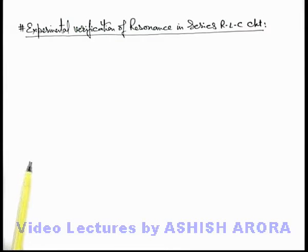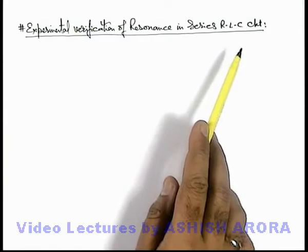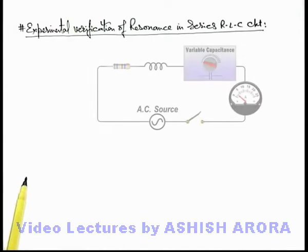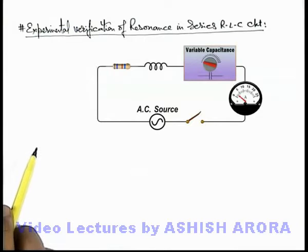Let us now understand the experimental verification of resonance in a series RLC circuit. Here you can see this is a series RLC circuit in which we have used a resistance, an inductor, and a variable capacitor.